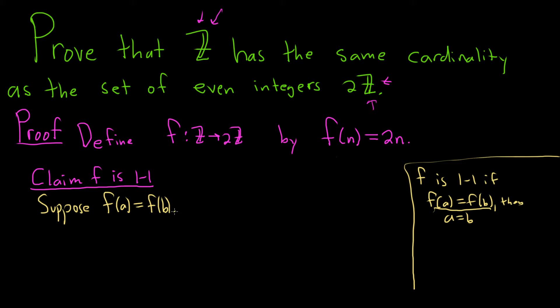f of n is 2 times n. So f of a is just 2 times a. So this means 2a is equal to 2b. And so we just divide by 2, so a is equal to b. We've shown f is 1 to 1 because we started with f of a equals f of b and we arrived at a equals b. Thus f is 1 to 1.